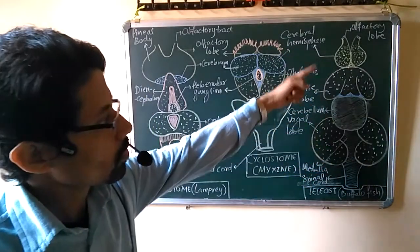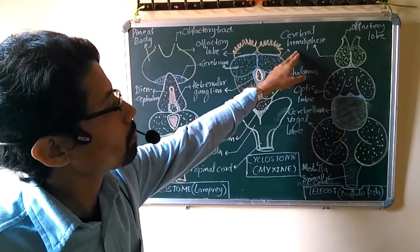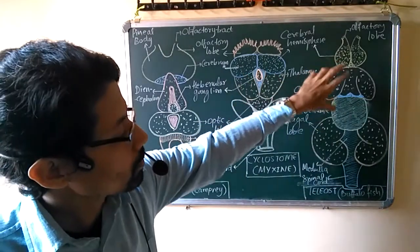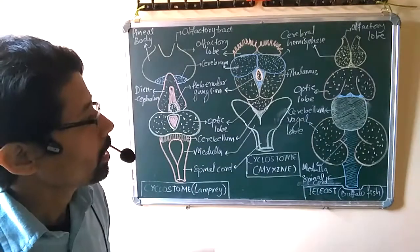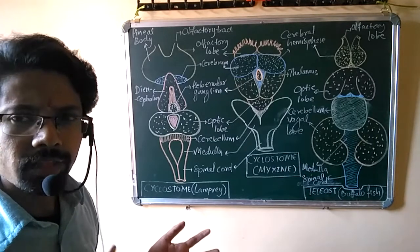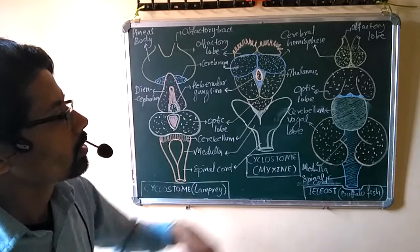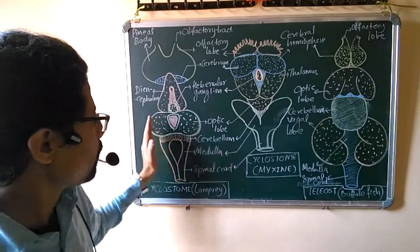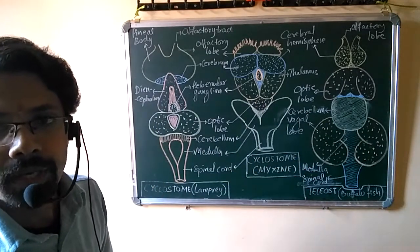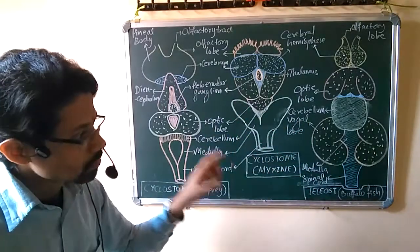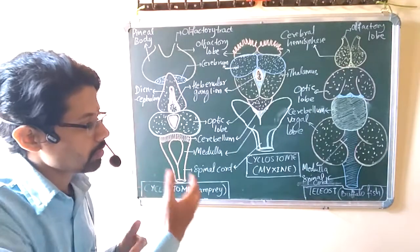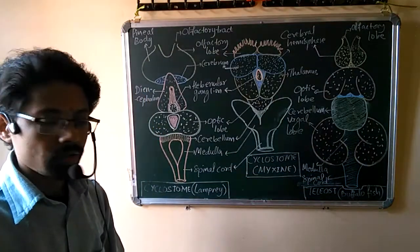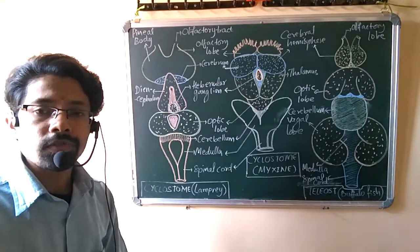In the bony fish (teleost), the olfactory lobes are small. The cerebral hemispheres are quite developed and separated — separate lobe formation begins from bony fish. The cerebral hemispheres are smaller but are distinct separate lobes. Below that are the optic lobes, which are quite well developed and separated. Then you find the cerebellum, which is the largest among these three diagrams in the bony fish. Below the cerebellum are two bean-shaped structures called the vagal lobe, a characteristic feature of teleost fish. Then below that is the medulla oblongata, which continues into the spinal cord.